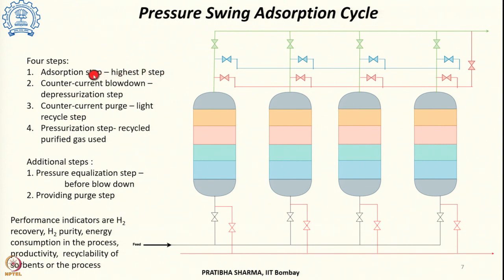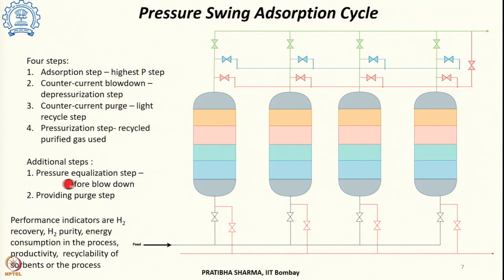This is the 4-step cycle of a PSA. However, we can achieve higher hydrogen recovery by adding additional steps. In the blow-down step, a substantial amount of hydrogen still remains in the bed, and if not removed it may go into the tail gas and be burned off. We can add a pressure equalization step before the blow-down step to achieve more hydrogen recovery.